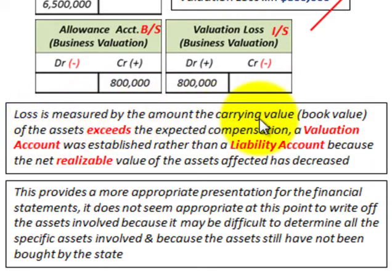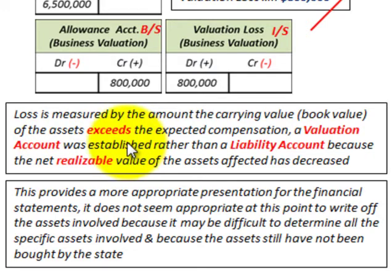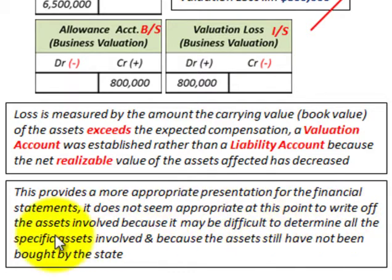The loss is measured by the amount the carrying value or book value of the assets exceeds the expected compensation from the state. A valuation account was established rather than a liability account because the net realizable value of the assets affected has decreased. Normally with loss contingencies you would set up a liability account, but in this case the valuation account provides a more appropriate financial statement presentation. It does not seem appropriate to write off the assets because it may be difficult to determine all the specific assets involved.